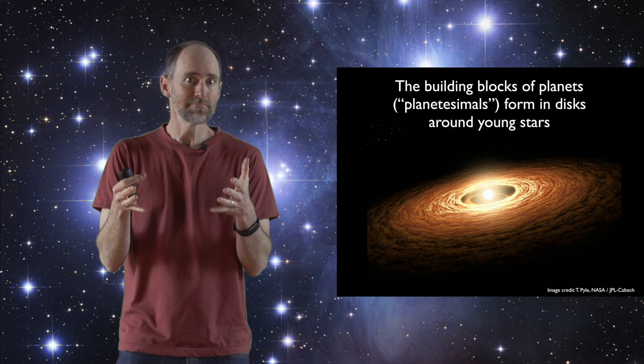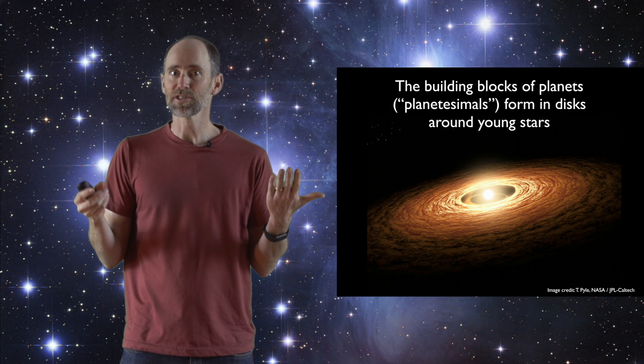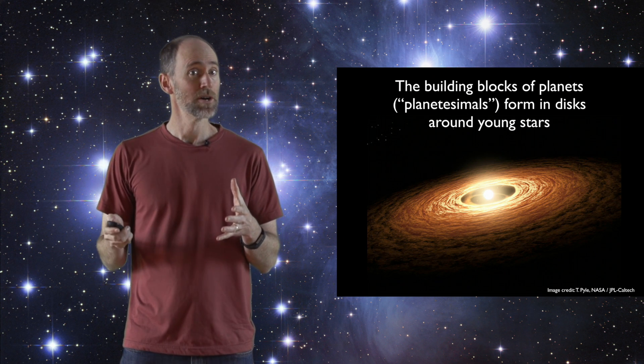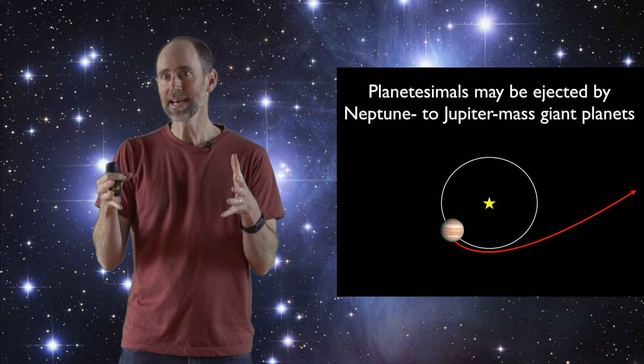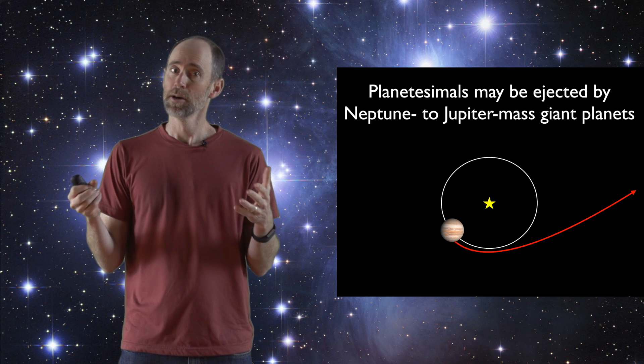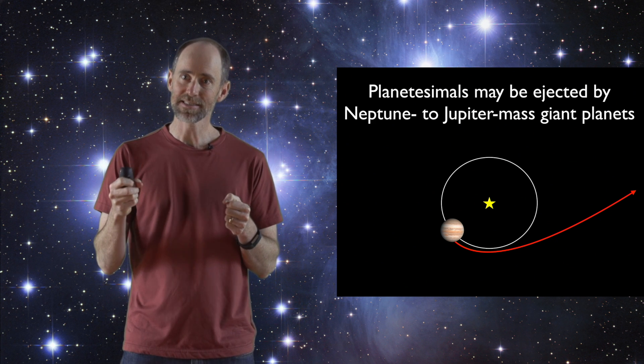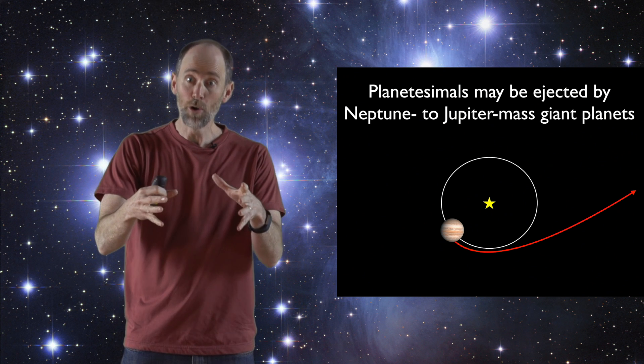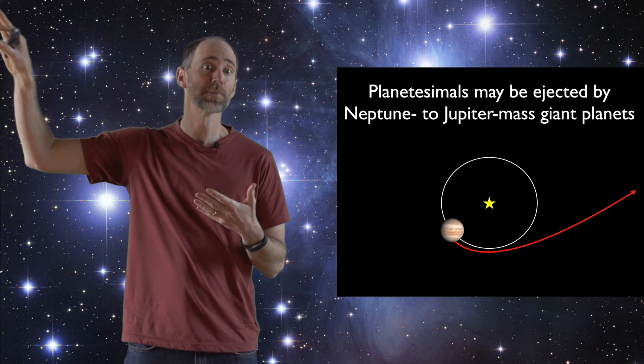Okay, but we've seen objects from interstellar space now, so how do they get from their disks into interstellar space? They need some kind of kick, and we think that giant planets, Neptune to Jupiter mass giant planets, provide the gravitational kick necessary to eject planetesimals from their home planetary systems out into interstellar space.